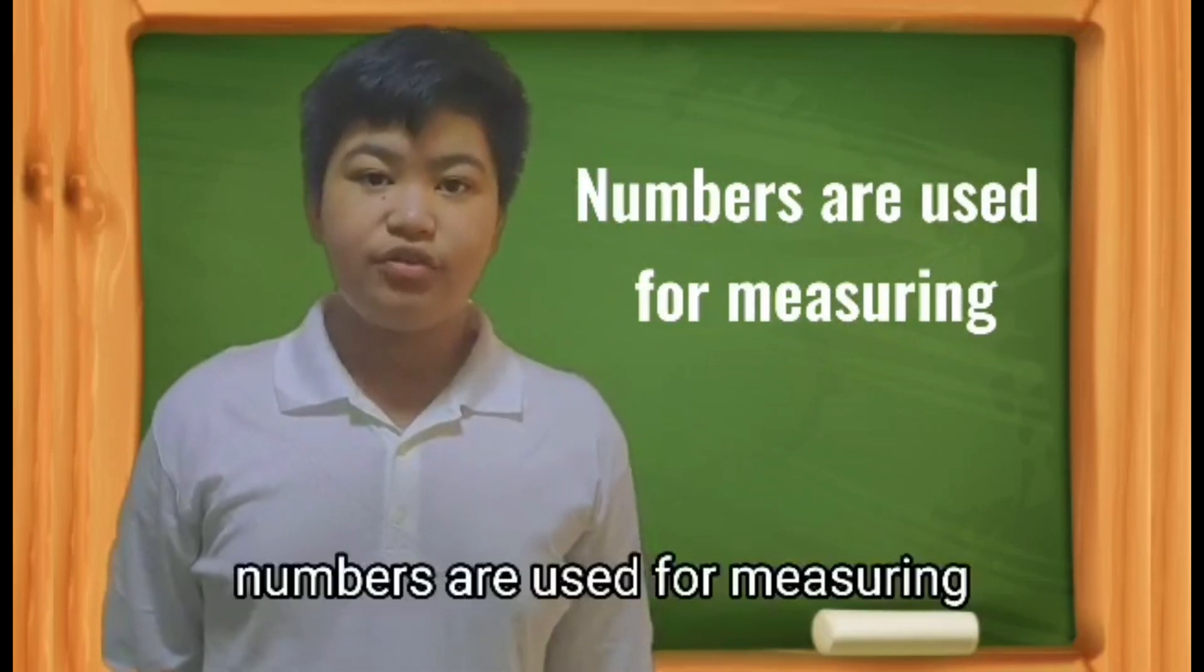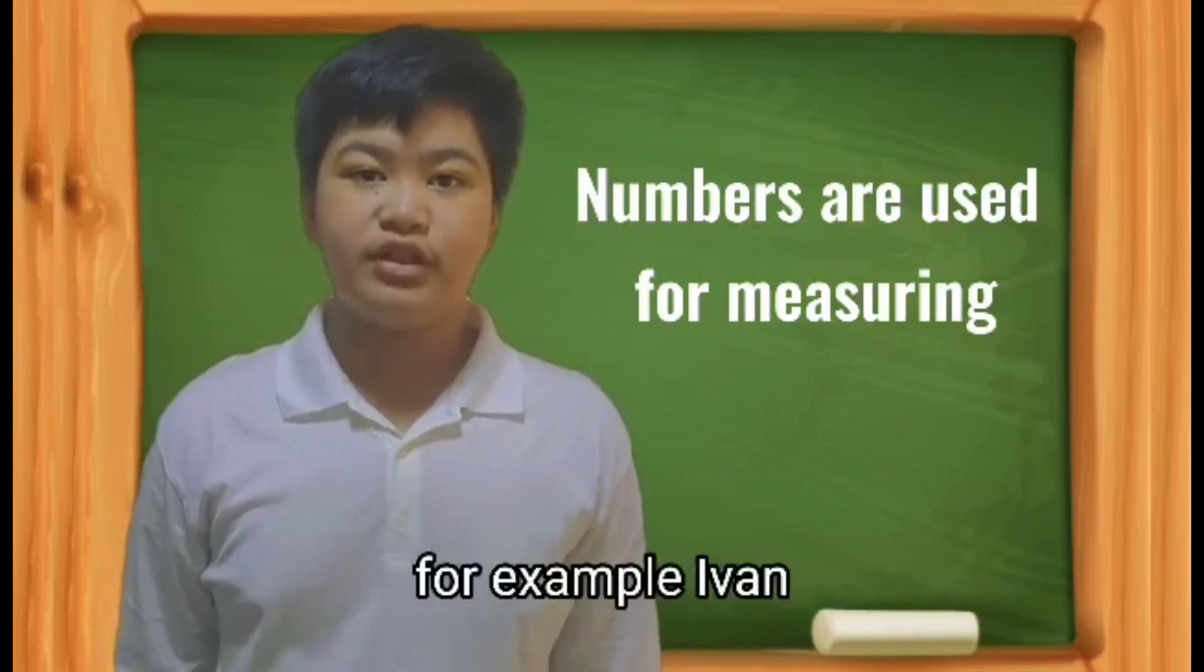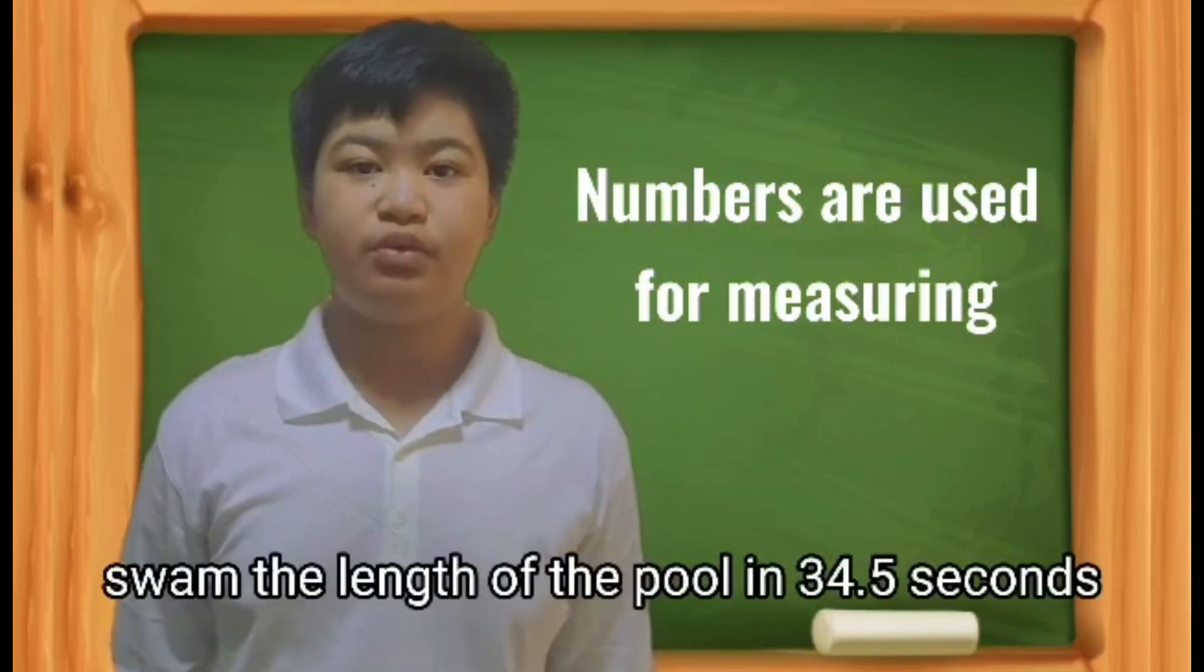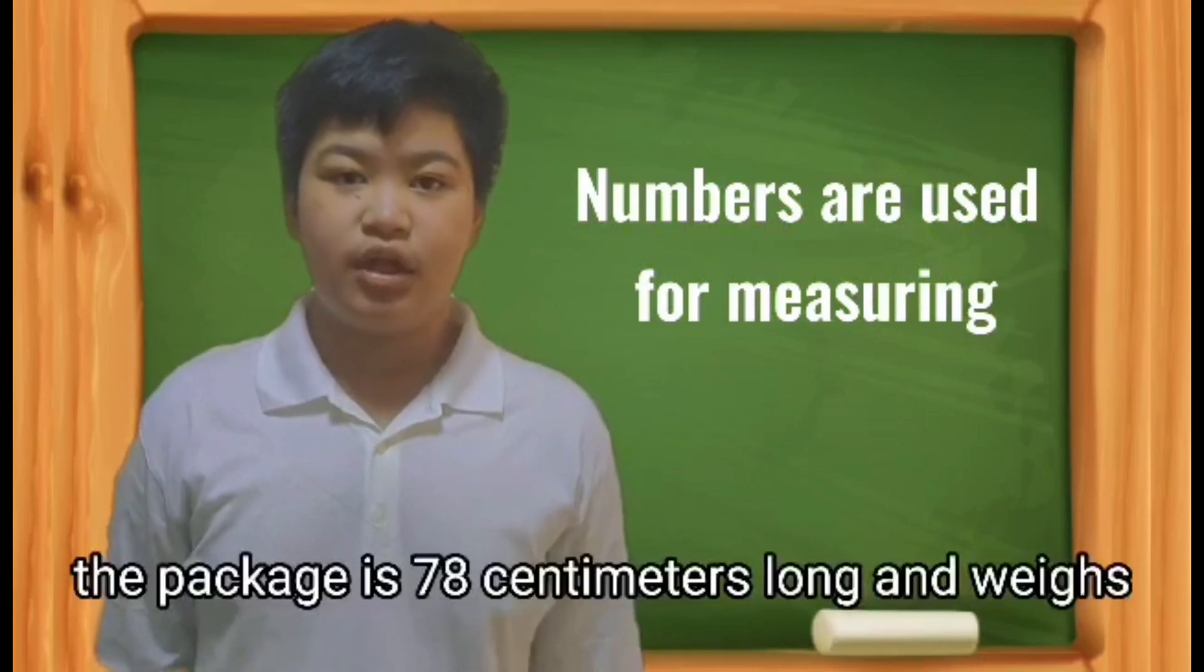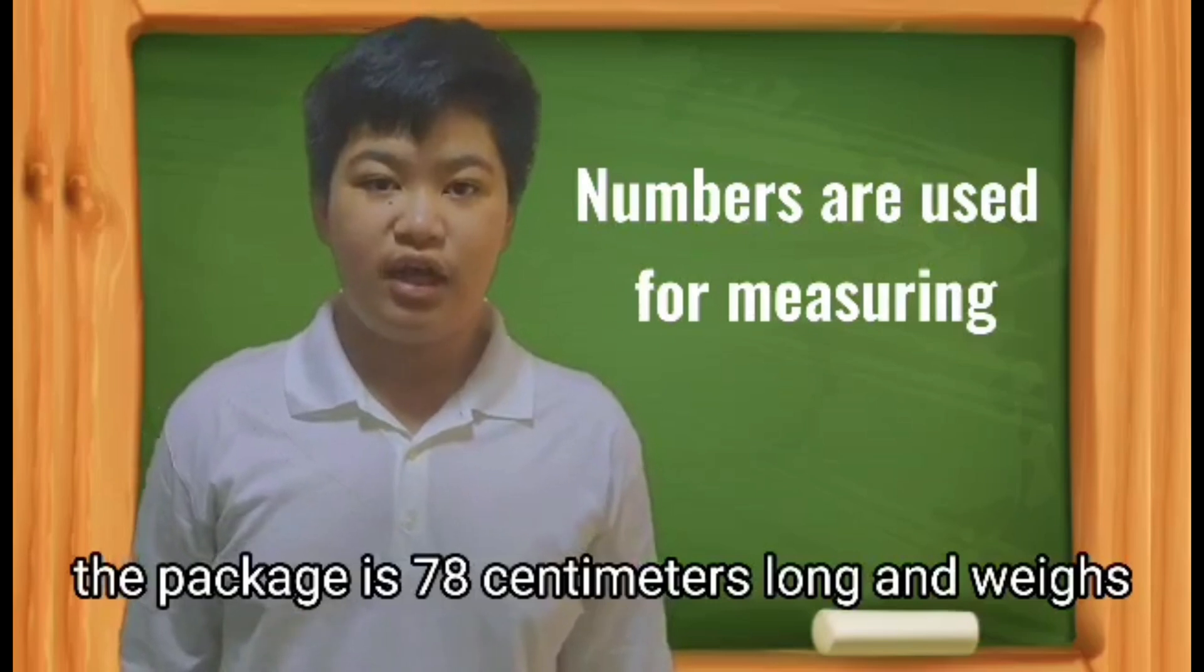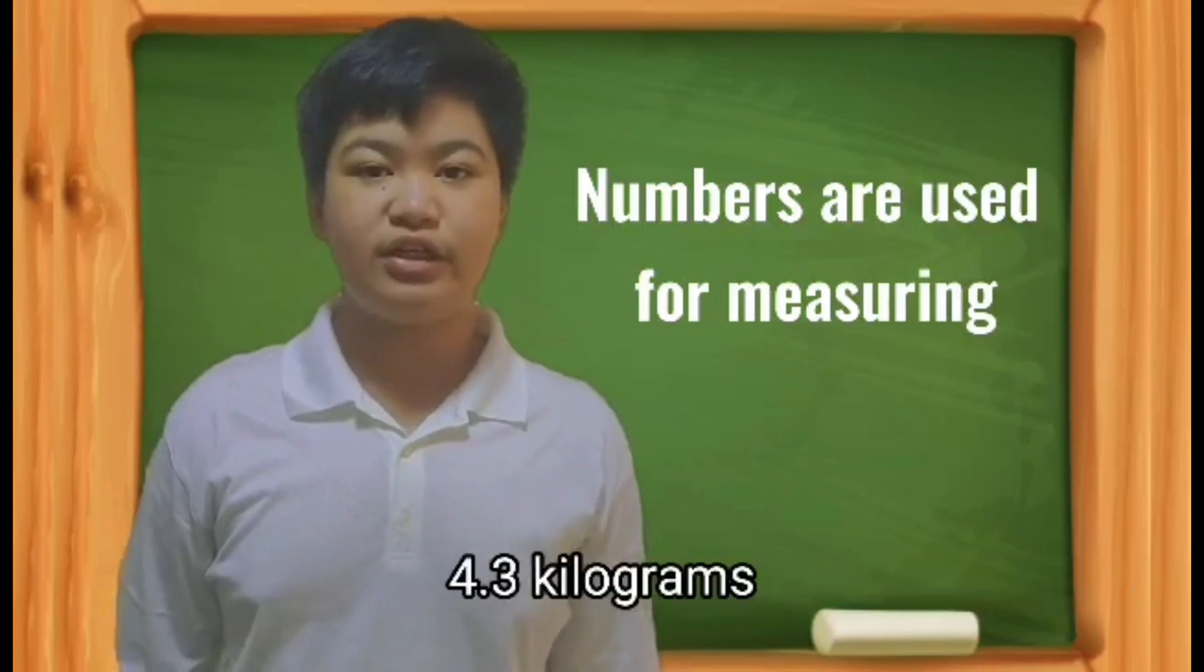Numbers are used for measuring. For example, I can swim the length of the pool in 34.5 seconds. The package is 78 centimeters long and weighs 4.3 kilograms.